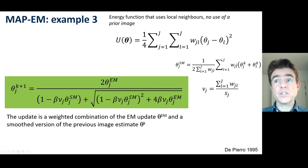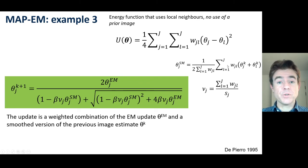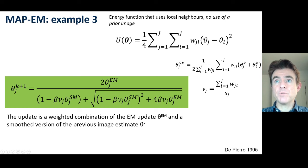Indeed, it depends on your choice of weights, which can be very spatially variant. So this can in fact be very different to some kind of convolution smooth. By using that expression with guided weights and a quadratic prior as shown,